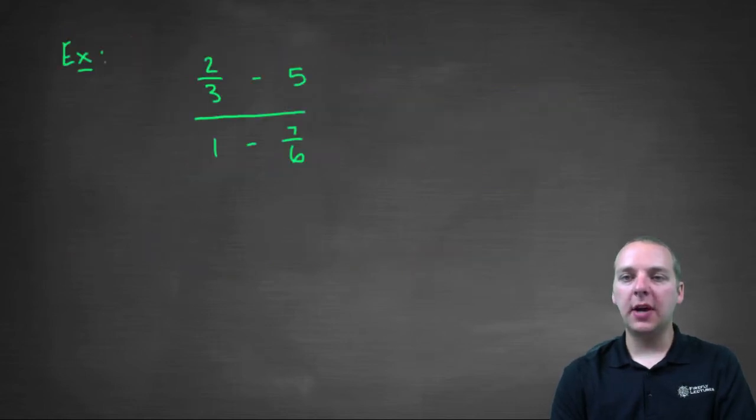So let's try a couple examples. I've got an easier one and a harder one. This one's a pretty light one, just to kind of get the concept down, and then we'll do a more difficult one in just a second. So here this is just numbers: two-thirds minus five, divided by one minus seven-sixths. Complex fraction - I want to make it not a complex fraction anymore. So I look at my little mini-fractions, which is this guy and this guy only: two-thirds and seven-sixths.